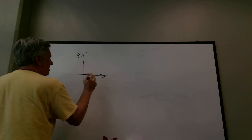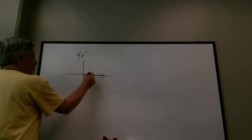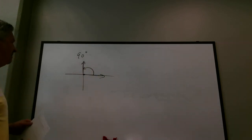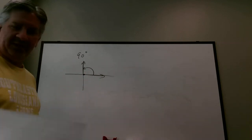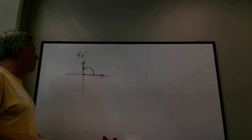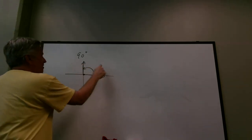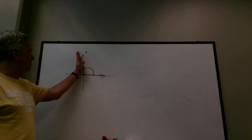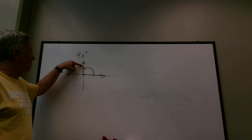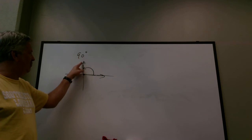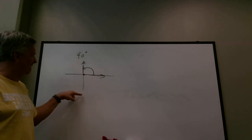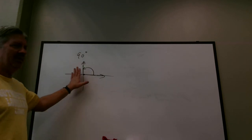Let's look at the angle 90 degrees in standard position. The initial side is along the positive x-axis and the terminal side points straight up. What if you went all the way around one complete revolution? You'd end up at the same place. If you keep adding or subtracting 360s, you always return to the same terminal side.